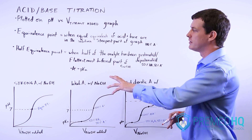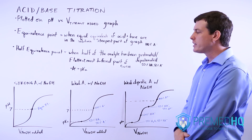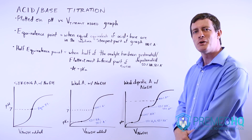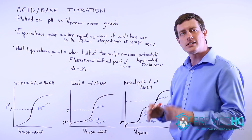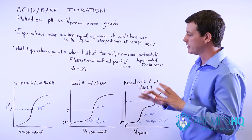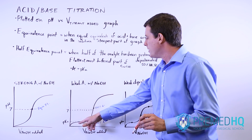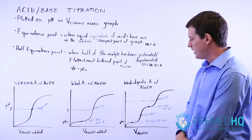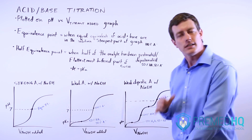The other important point is the half equivalence point, which is always found at the flattest point of these graphs, and it's the most buffered point. The half equivalence point means that you've added half as many base equivalents as you started out with acid equivalents. That means at your half equivalence point, you have 50% of the acid still in its protonated form and 50% is deprotonated. For any weak acid being titrated with a base, the weak acid's pKa will be exactly at the pH where you see your half equivalence point.